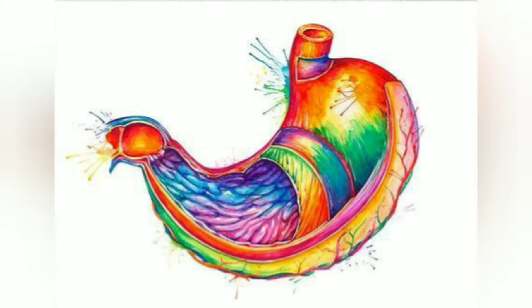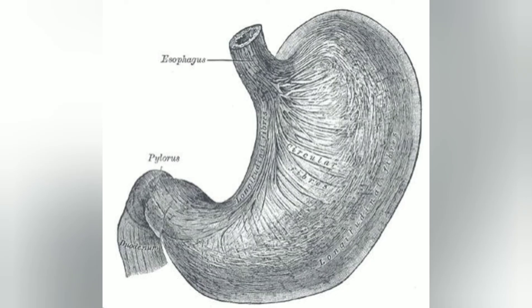In the stomach, the gastric phase of digestion takes place. The food is further broken down by mixing with gastric acid until it passes through the duodenum. In the third intestinal phase of digestion, it is mixed with a number of enzymes produced by the pancreas.